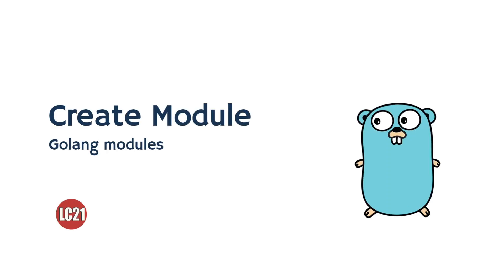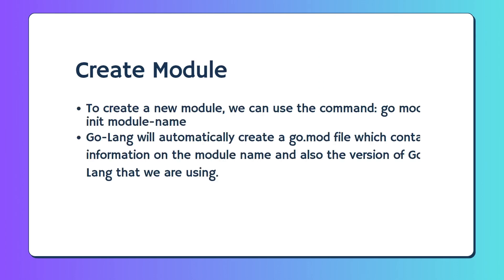To create a new module, we can use the command go mod init followed by the module name. Go will automatically create a go.mod file which contains information on the module name and also the version of Go that we are using.